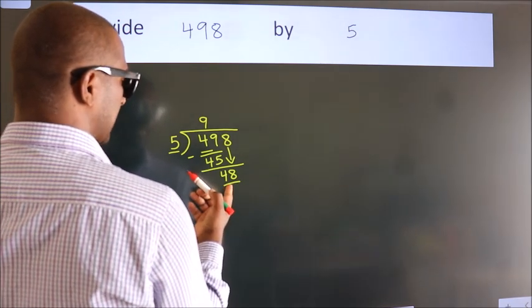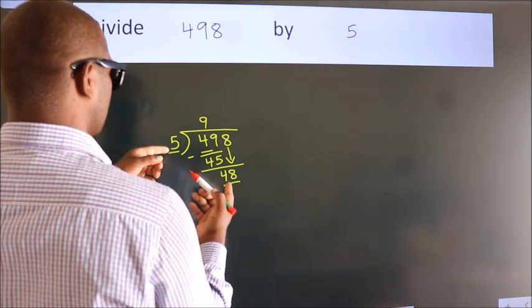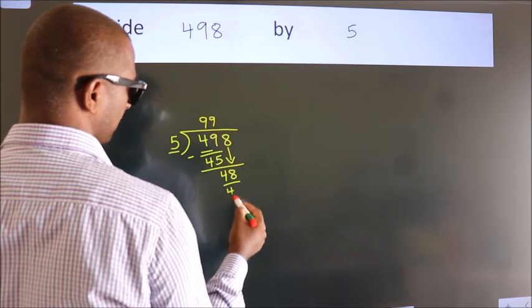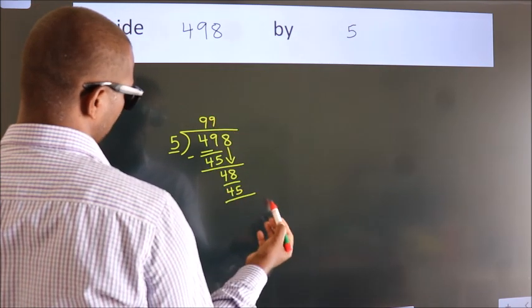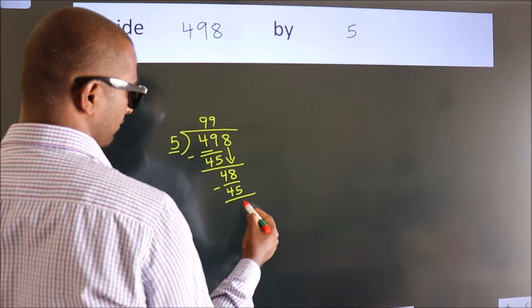A number close to 48 in the 5 times table is 5 times 9 equals 45. Now we subtract. We get 3.